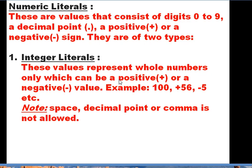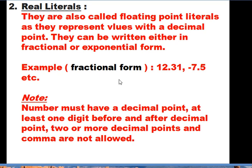Numeric literals are values that contain digits from 0 to 9; they may contain a decimal point and can have a positive or negative sign. The first type is integer literal — integer values represent whole numbers only, which can be positive or negative but cannot contain any fractional value. Examples: 100, +56, -5, etc. Note that spaces, decimal points, and commas are not allowed while writing integer values.